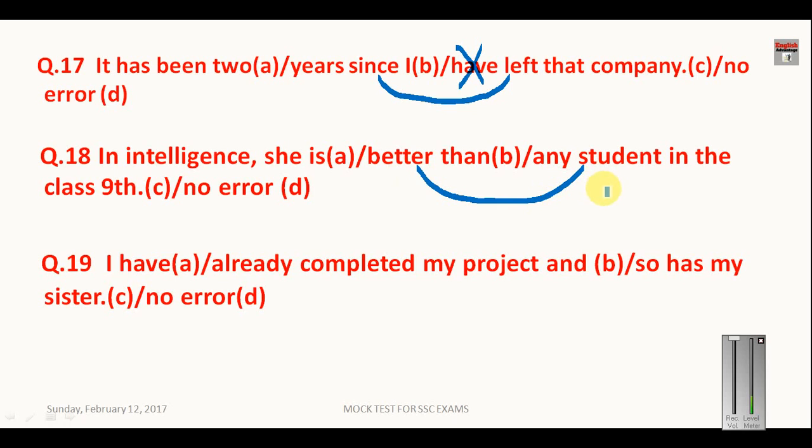In intelligence she is better than any student in the class 9th. So after better than is followed by any other. Better than is not followed by any only, it is always followed by better than any other. So here other is missing and your answer is C.